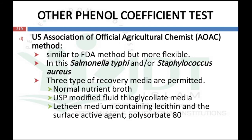Another phenol coefficient test is the US Association of Official Agricultural Chemists (AOAC) test. This is similar to the FDA method but is more flexible, using three different culture media: normal nutrient broth, US modified fluid thioglycolate media, and a medium containing lecithin and the surface-active agent polysorbate. Salmonella typhi and Staphylococcus aureus are also used here.